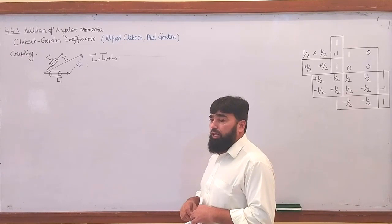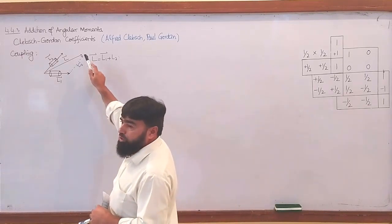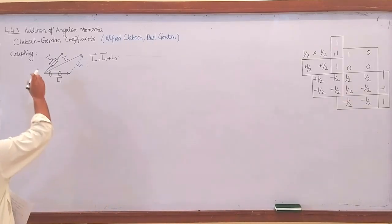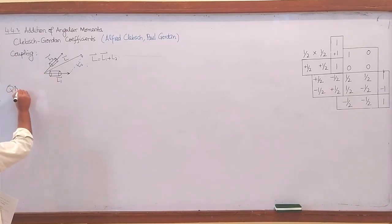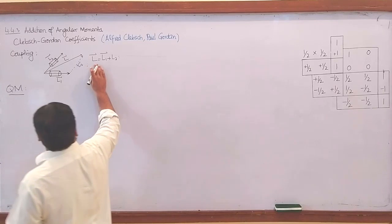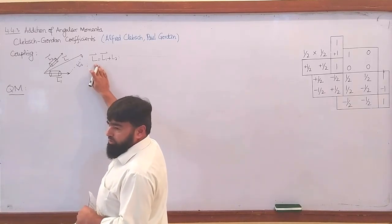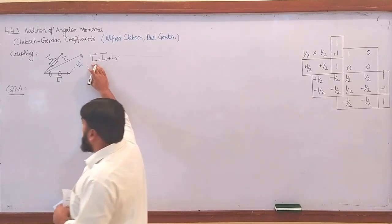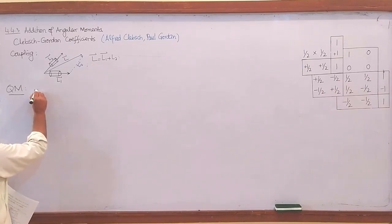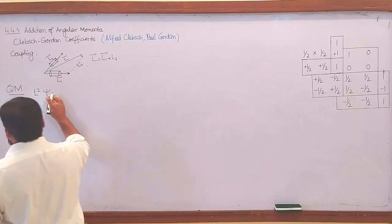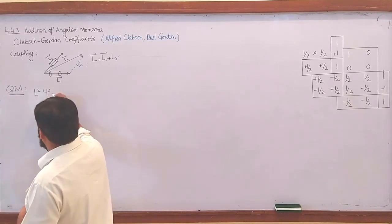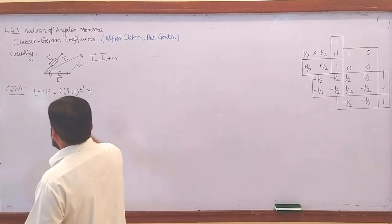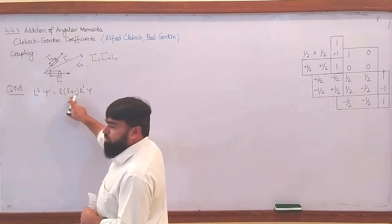We will have to understand the Clebsch-Gordan coefficients and then we will derive them. Now, in a quantum mechanical setup the values are quantized. When we consider the orbital angular momentum, it gives some quantized values. If I apply L-squared on a wave function, I get L(L+1) ħ² ψ, so the L values are quantized: L = 0, 1, 2, 3 — the orbital quantum number.